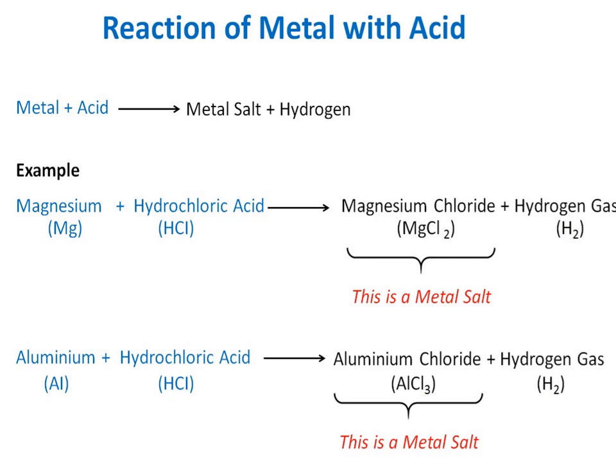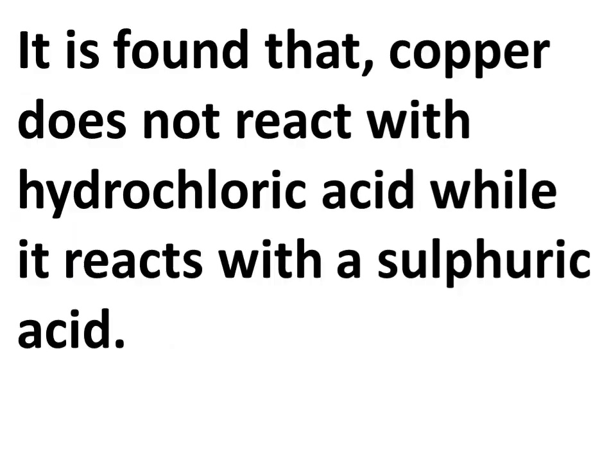Second example is aluminium, which is also a metal. You can even use aluminium foil - the foil used to cover food. When you add HCl (hydrochloric acid) to aluminium, it forms AlCl₃ (aluminium chloride, a metal salt) and also gives hydrogen gas. So both reactions give metal salt plus hydrogen gas.